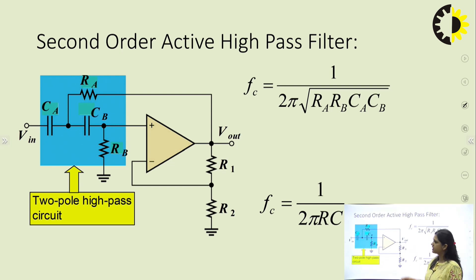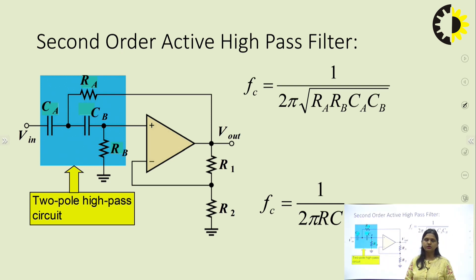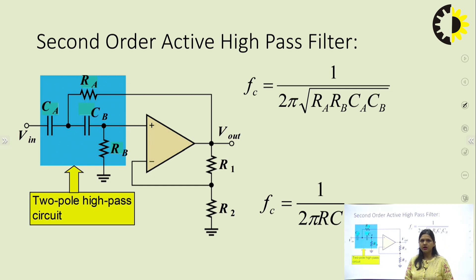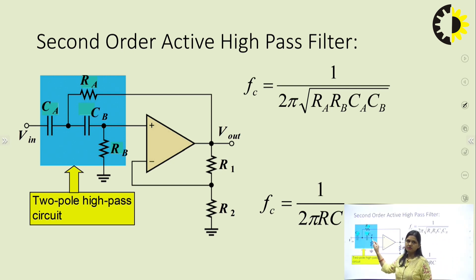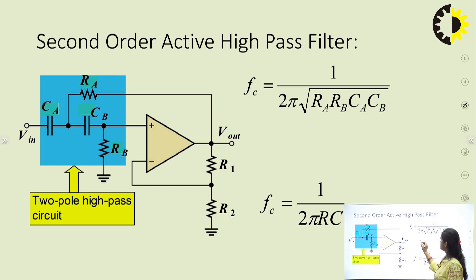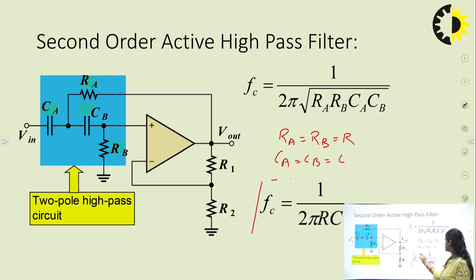Similarly, we can implement a second order active high pass filter. Here, two poles are introduced at the non-inverting node of the op-amp, similar to the low pass Sallen-Key design. Feedback is connected at the inverting terminal, so the gain is 1 + R1/R2. The cutoff frequency for the second order high pass filter is Fc = 1/(2π√(RA·RB·CA·CB)), and if RA = RB = R and CA = CB = C, then Fc = 1/(2πRC).